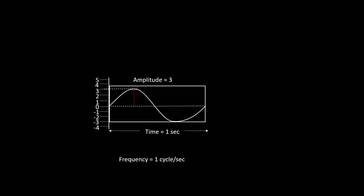Sine waves are fundamental in understanding the Fourier transform. A sine wave is an oscillating waveform which has frequency, amplitude, and phase. Here is a sine wave whose amplitude is 3 units and whose frequency is 1 cycle per second, meaning there is 1 complete cycle in a 1-second duration. Hence the amplitude is 3 units.